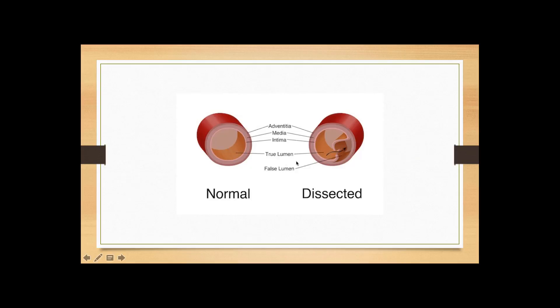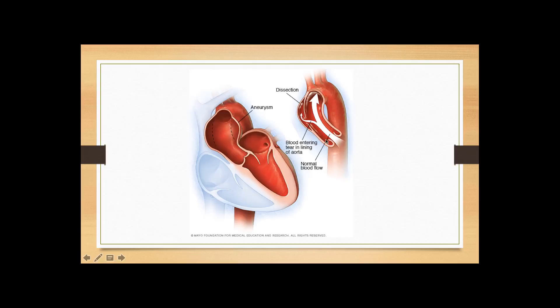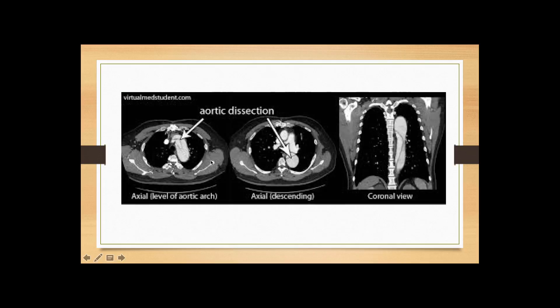This slide shows aortic dissection: you can see the normal aorta and then a false lumen that has developed, through which blood starts to traverse instead of going in the right direction. The CT scan shows a clear line representing dissection, with the axial descending aorta and a coronal view showing a very linear aortic dissection — blood is passing through the false lumen in the aorta.